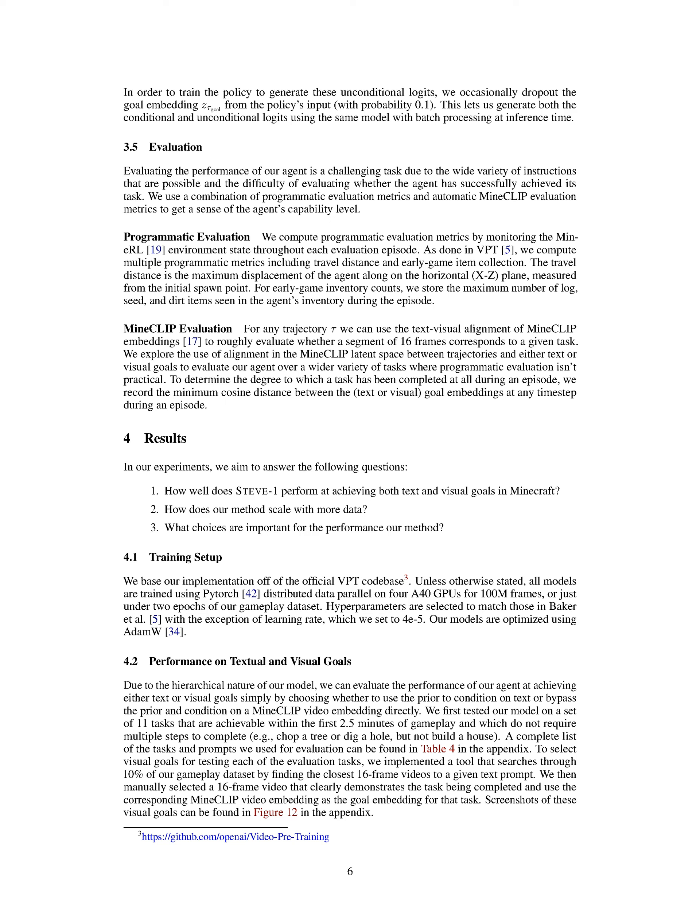To gauge whether a task has been completed during an episode, we note the smallest cosine distance between the goal embeddings — either text or visual — at any point during an episode. In our experiments, we aim to answer: how effectively does our agent perform in achieving both text and visual goals? How does our method's performance change with more data? And what decisions are crucial for our method's performance? All models are trained using PyTorch distributed data parallel on 4 A40 GPUs for 100 million frames, which is just under two epochs of our gameplay dataset, with a learning rate of 4e-5 and optimization via AdamW.